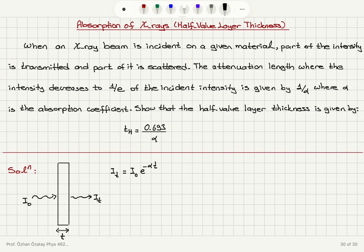When the thickness is equal to the attenuation length, where the intensity decreases to 1/e of its incident value, that is when we have e to the minus 1 here. So alpha t should equal 1, meaning when t is equal to 1 over alpha, the intensity is basically I₀ divided by e, or I₀ times e to the minus 1. That's what we have here.